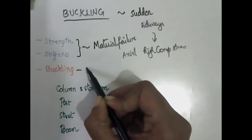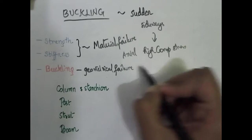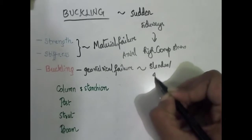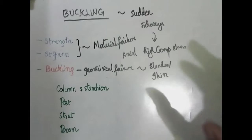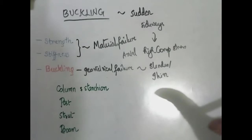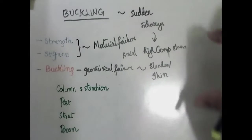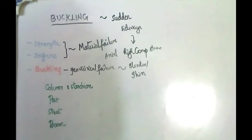Buckling is actually not a material failure — it is a geometrical failure. We can say that it is a geometrical failure because the member is slender or thin. When the column is stocky or short, it is not a buckling failure. But when it is slender or thin, it is a buckling. So buckling is actually a mathematical instability or geometrical failure mode, which is characterized by sudden and sideways deflection.